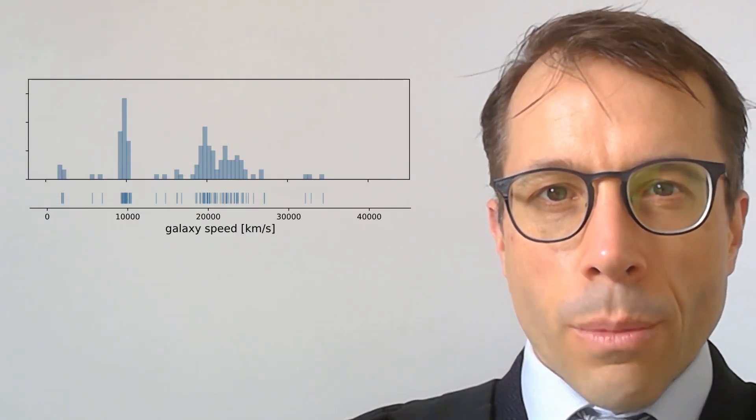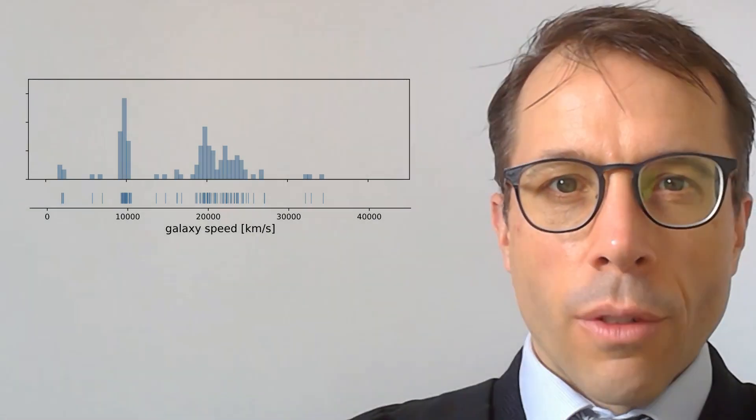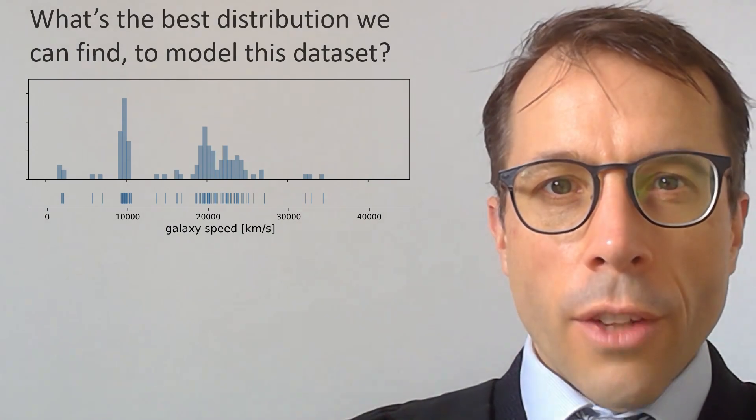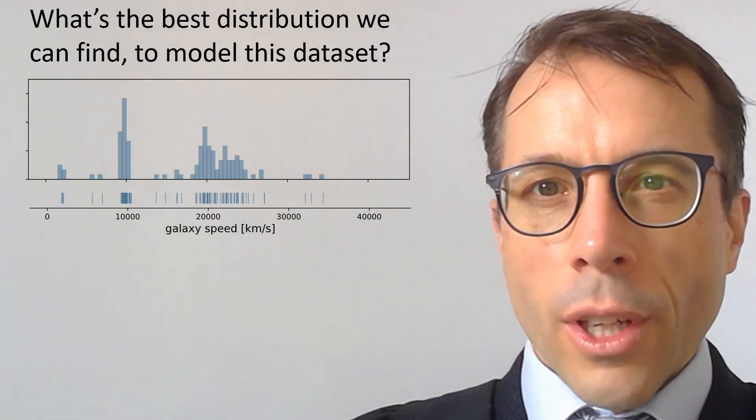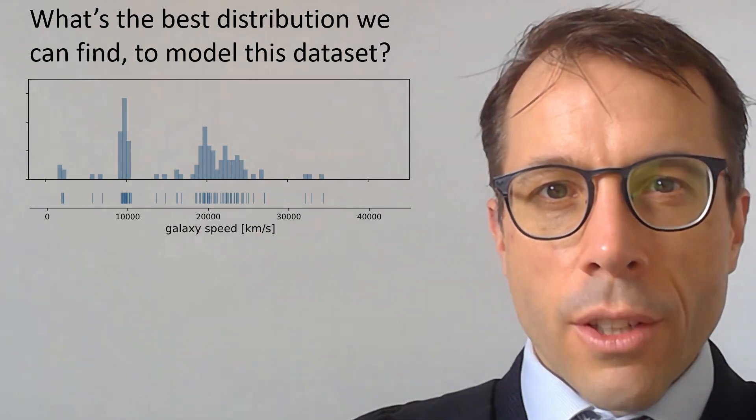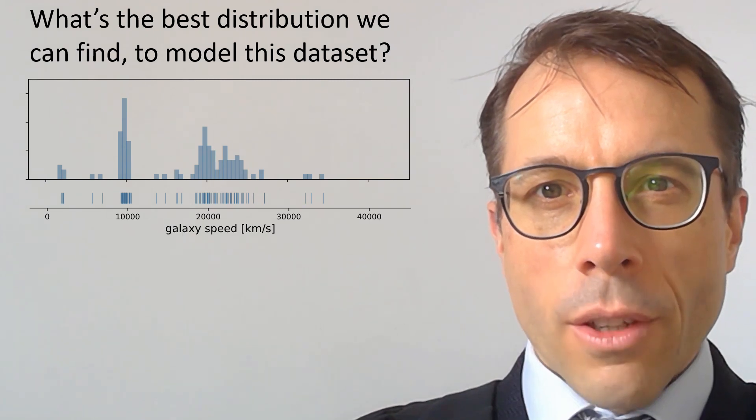If we took a blank slate approach to this problem, if all we had was the dataset and we didn't have any theory from astronomy to guide us, what is the best distribution that we can find? Do we trawl through every single random variable we can find on Wikipedia and fit them and all their possible variations? Or is there a better answer?